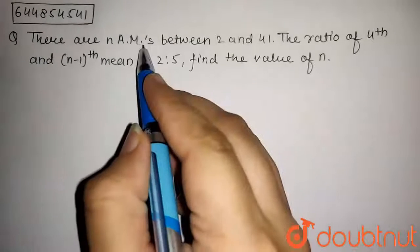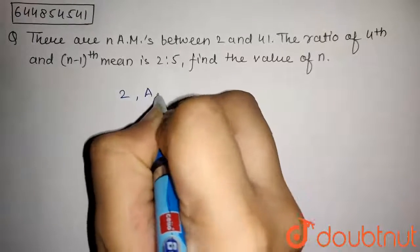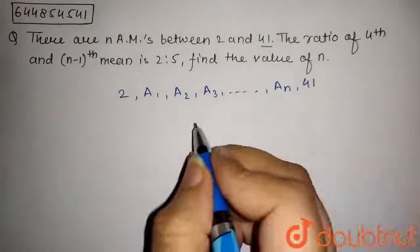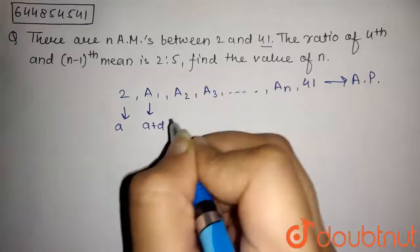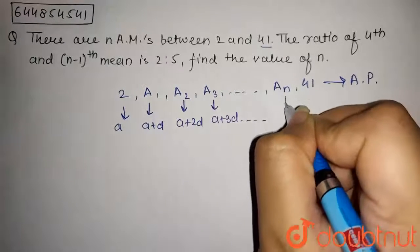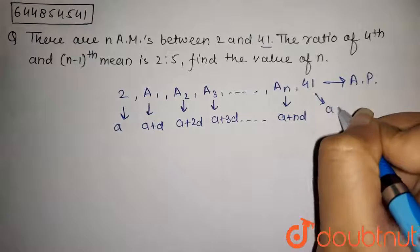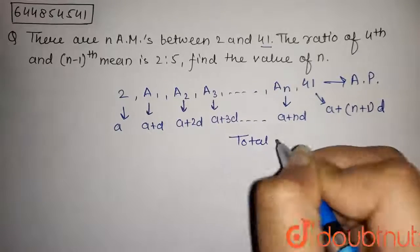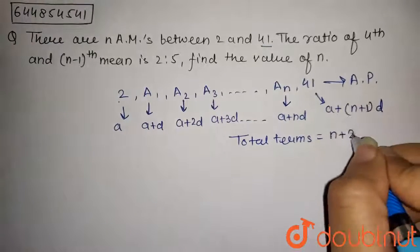In this question, we have given that n arithmetic means are inserted between 2 and 41, so the sequence is: 2, then arithmetic means a1, a2, a3, up to an, and the last term is 41. This belongs to an arithmetic progression. The first term is a, the second is a plus d, the third is a plus 2d, the fourth is a plus 3d, and so on. The (n+1)th term is a plus nd, and the last term is a plus (n+1)d. Total terms in this sequence: n arithmetic means plus the first and last numbers gives n plus 2 total terms.